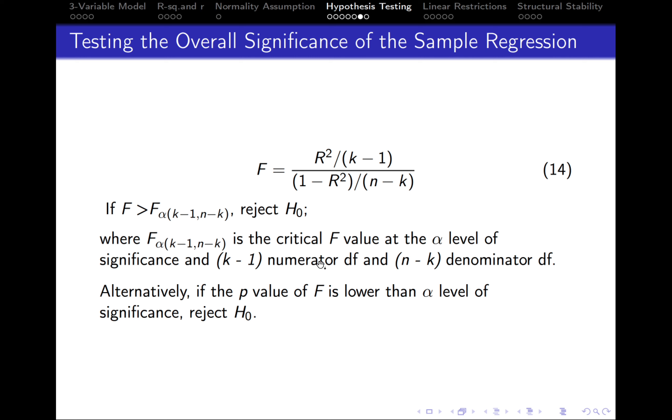k minus one, this is the degrees of freedom in the numerator, and n minus k, this is the degrees of freedom in the denominator.